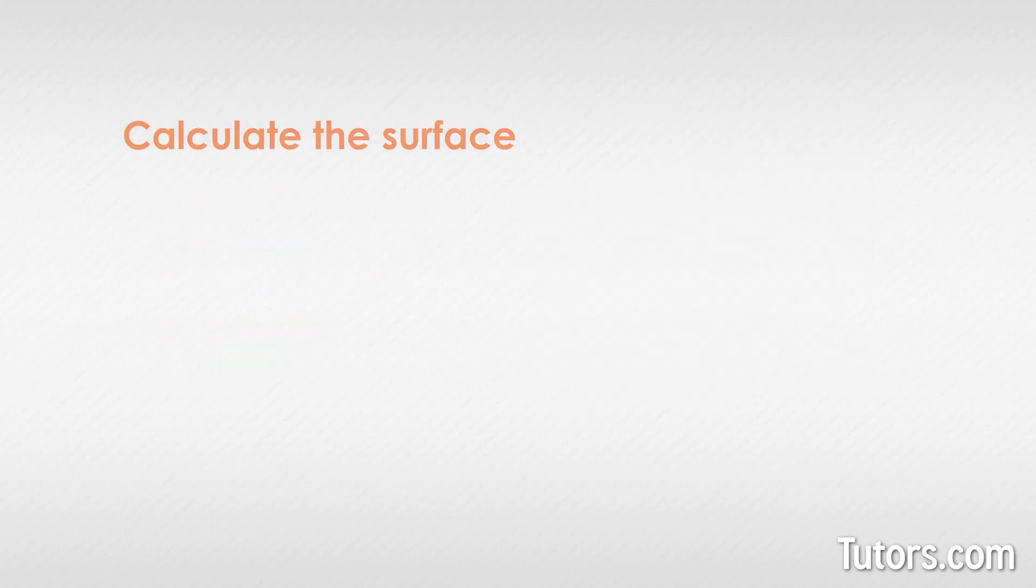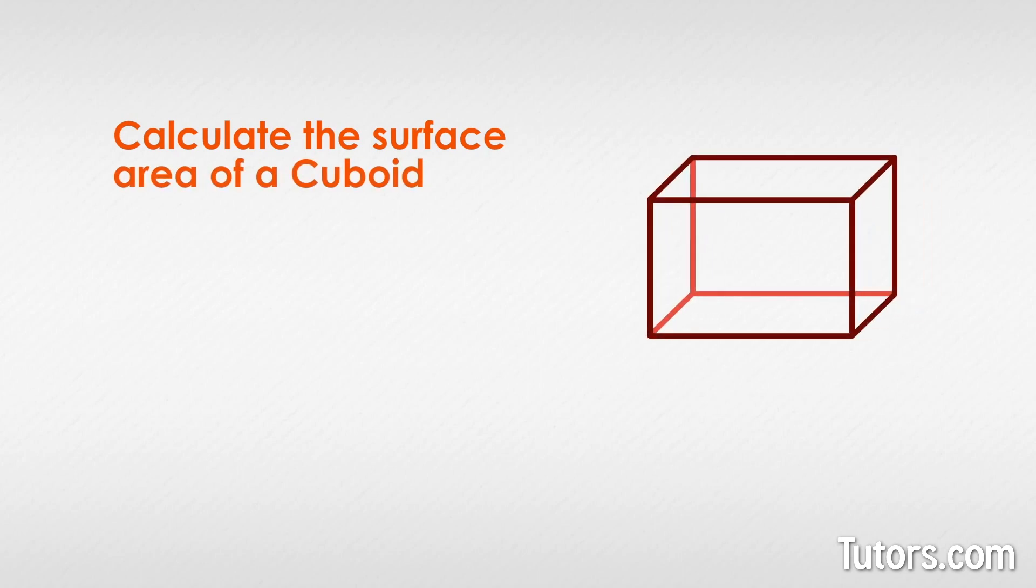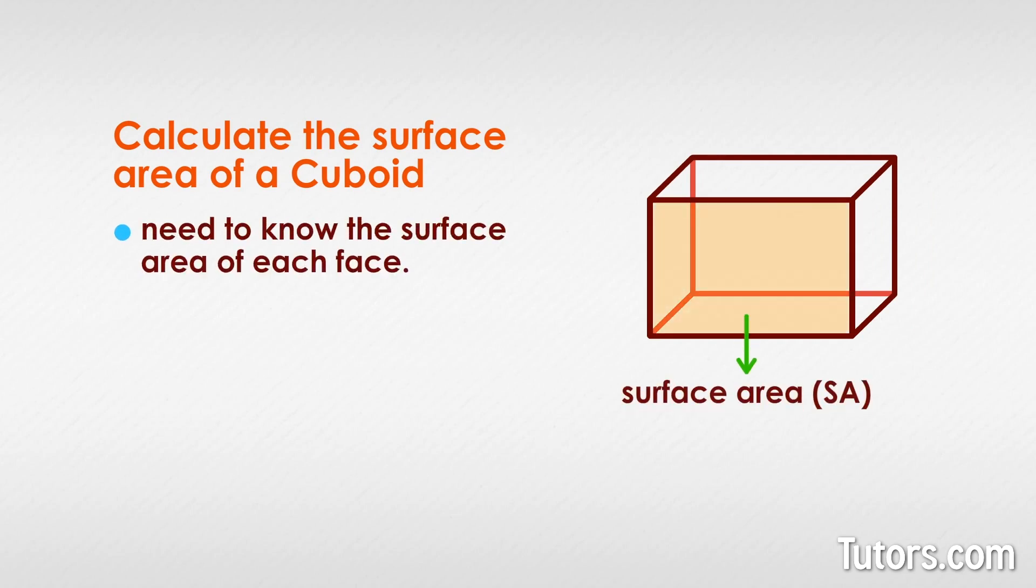Now let's learn how to calculate the surface area of a cuboid. To calculate the surface area of any cuboid, you need to know the surface area of each face. You then add all six areas together. Because opposite faces are congruent, you only need three faces, which you can multiply times two and then add together.